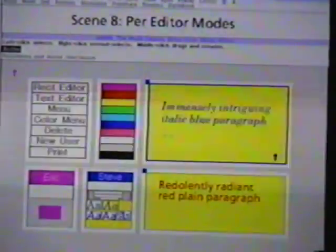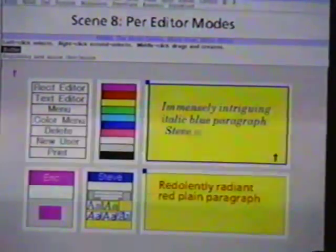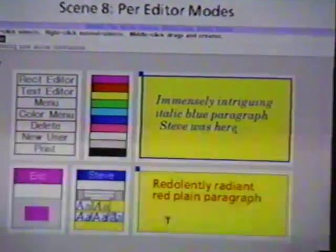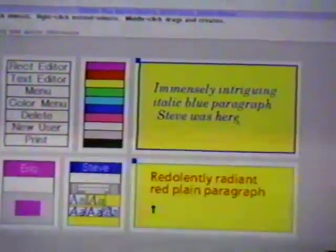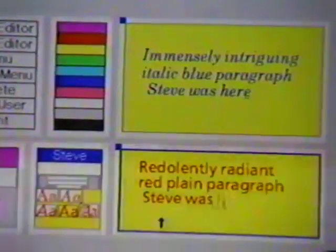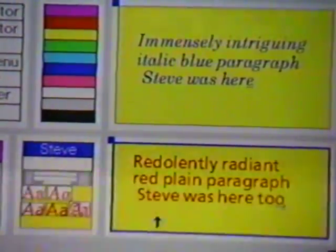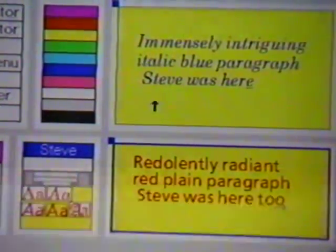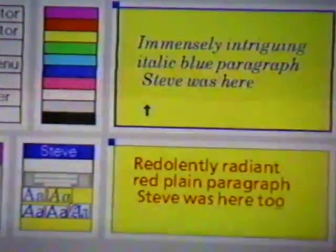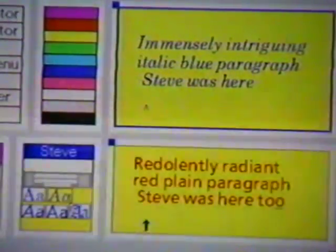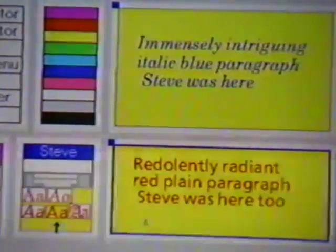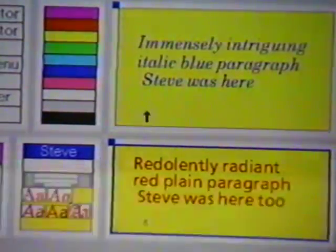Steve is working on two documents at once. In one, he is in the middle of typing a blue italic paragraph. In the other, he is typing a red, plain face paragraph. Each text editor window remembers Steve's current mode in that editor, so Steve types the right kind of text in each editor. Steve's home area shows the font family and text color for Steve's currently selected editor.